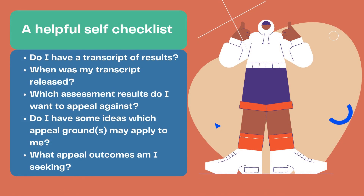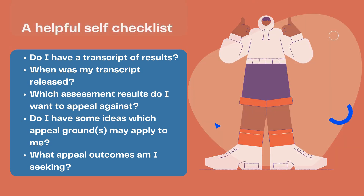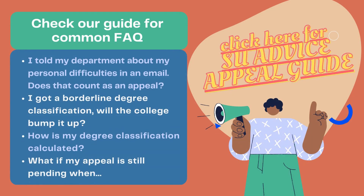Before you reach out to us, ask yourself the following questions: Do I have a transcript of results? A transcript is a form of publication of your assessment results in an academic year and you can find yours on My Goldsmiths. When was my transcript released? Which assessment results do I want to appeal against? Do I have some ideas on which appeal grounds may apply to me — remembering there are three grounds and you must meet at least one? And what are the appeal outcomes I am seeking? These questions can help you decide whether you are already eligible for a formal Stage 2 appeal. It would also be helpful to check our guide for frequently asked questions.